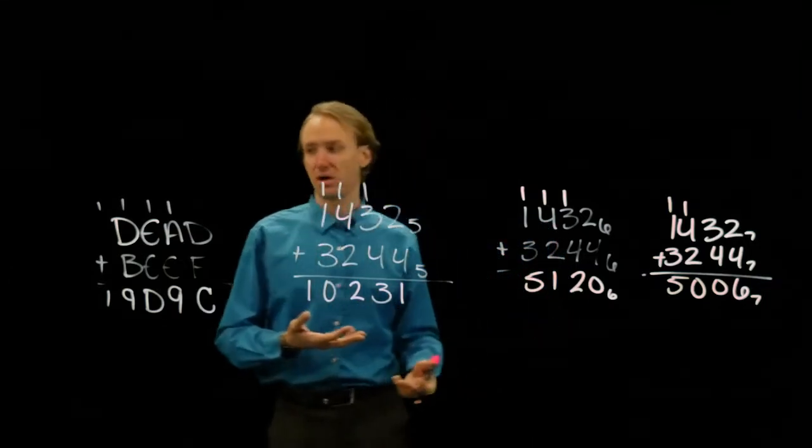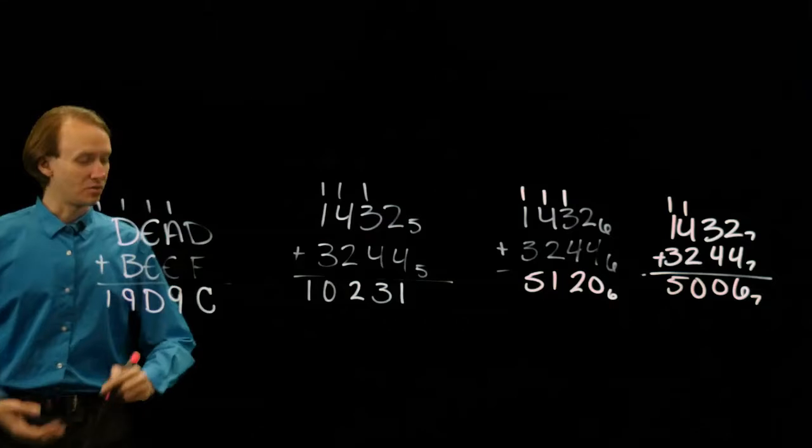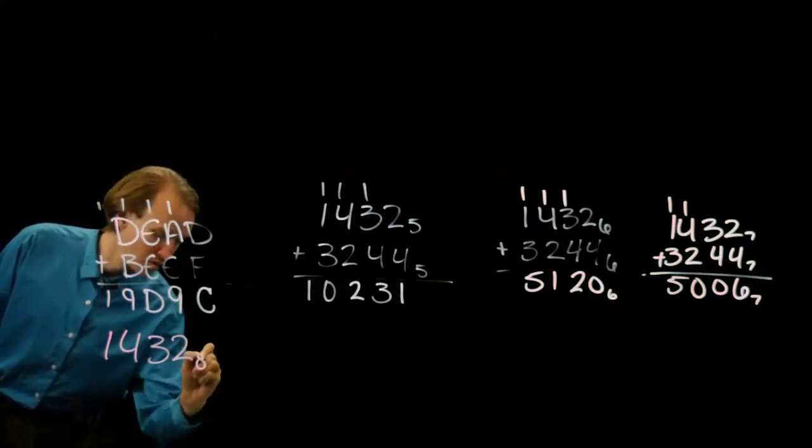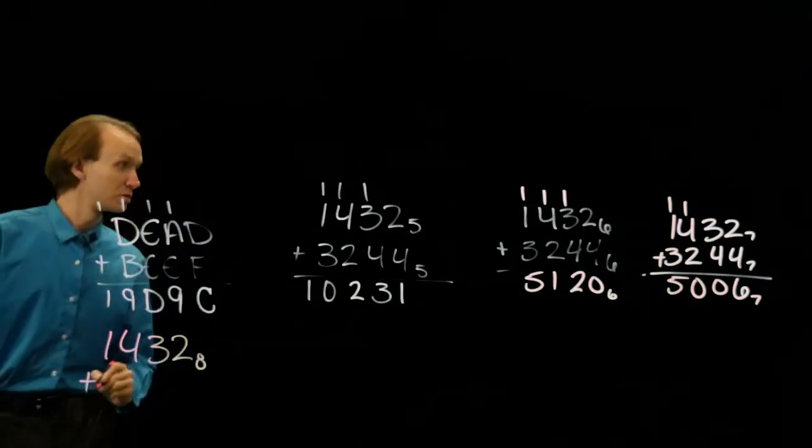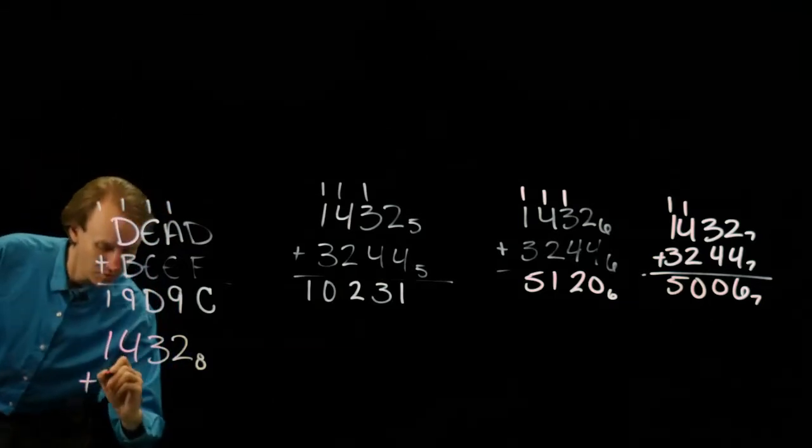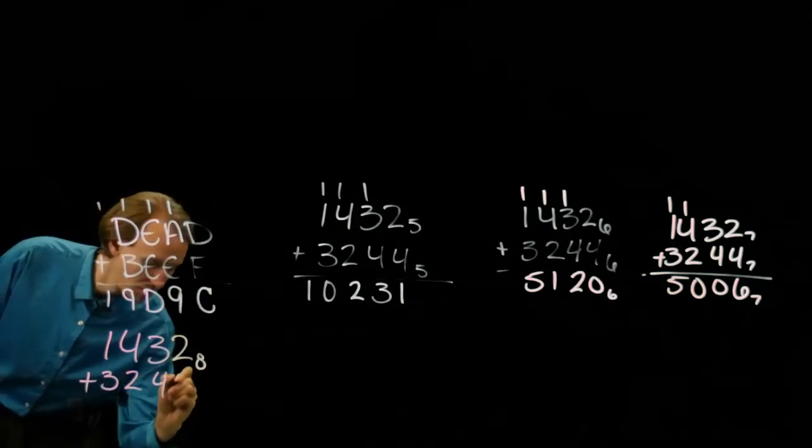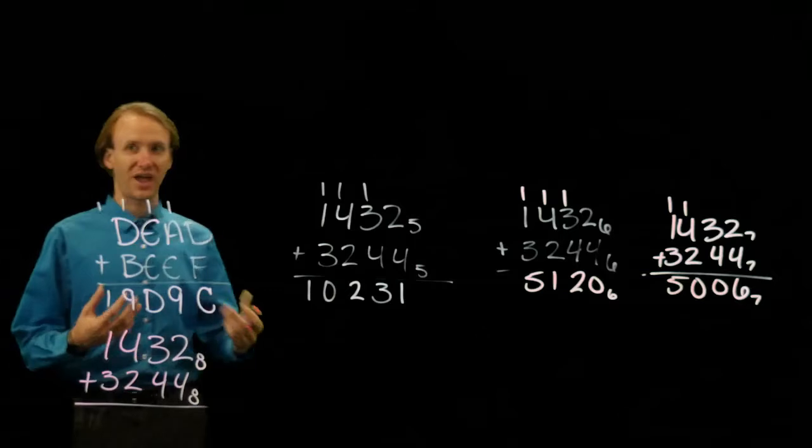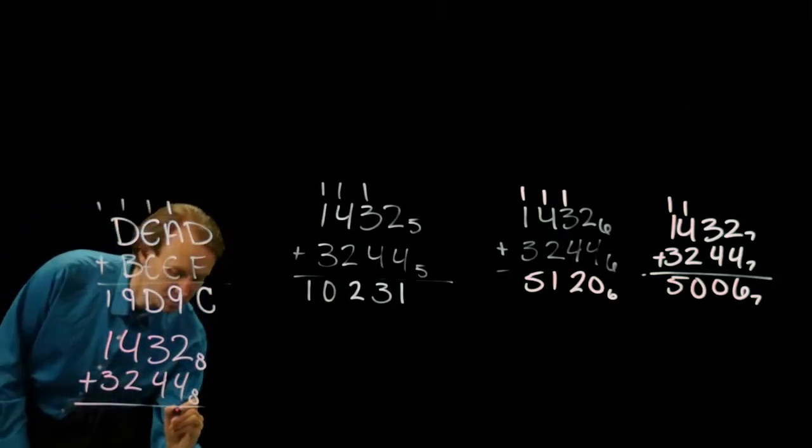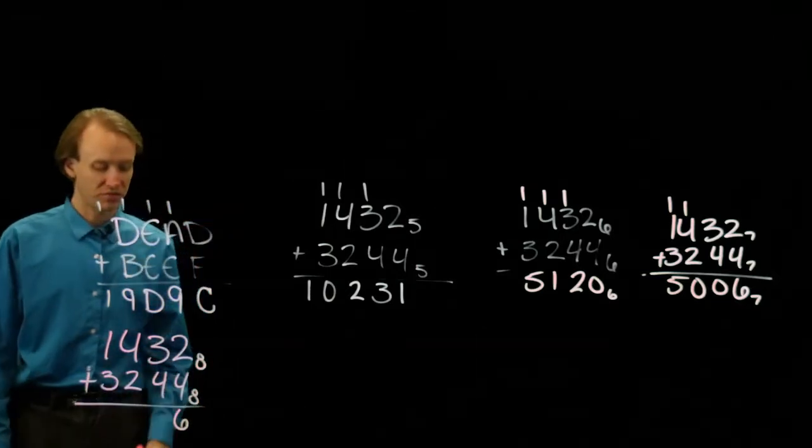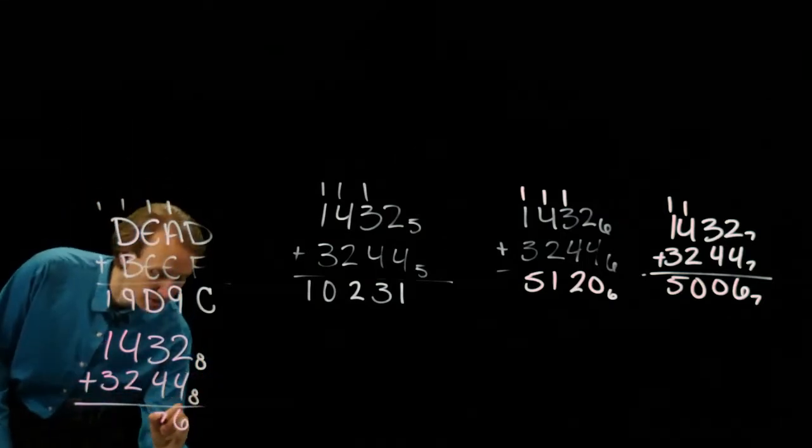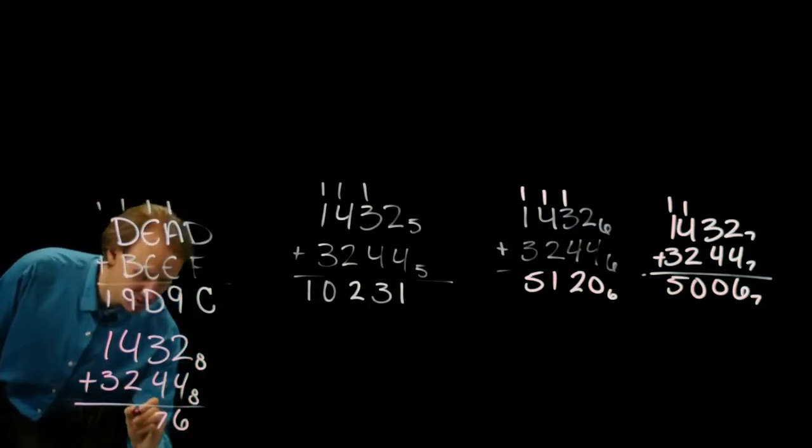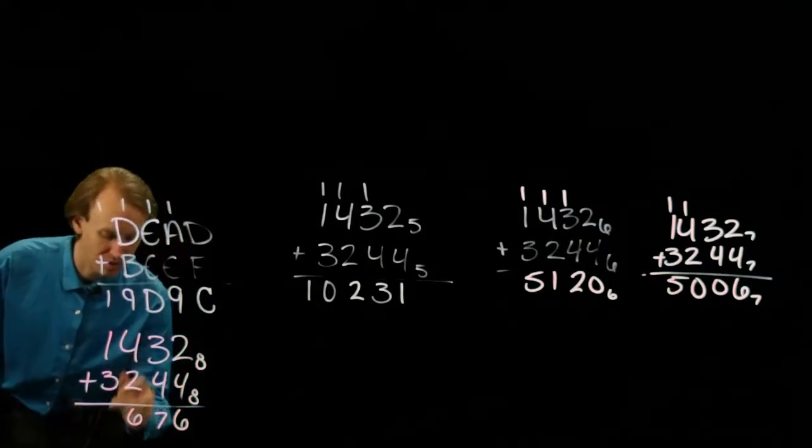And if I move up to doing this in octal, I would have... And now I'm looking for blocks of 8. So 2 plus 4 is 6. 3 plus 4 is 7, so I now have 7s in base 8. 4 plus 2 is 6, and then 1 plus 3 is 4.